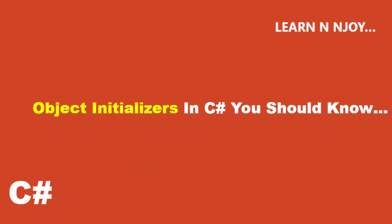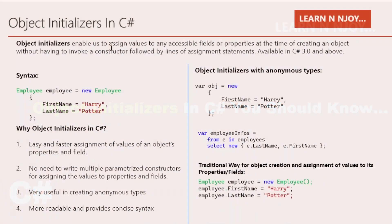Without any further delay, let's get started. Object initializers enable us to assign values to any accessible fields or properties at the time of creating an object, without having to invoke a constructor followed by lines of assignment statements. This feature is available in C# 3.0 and above.